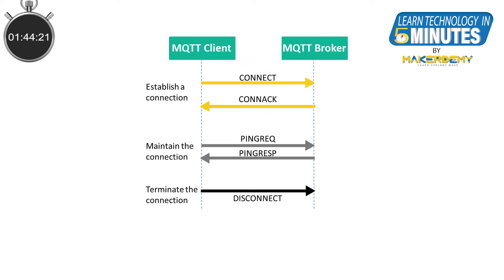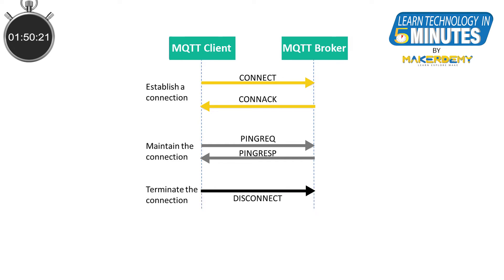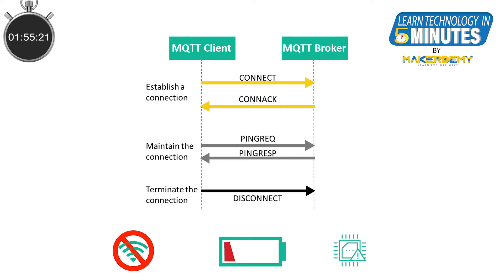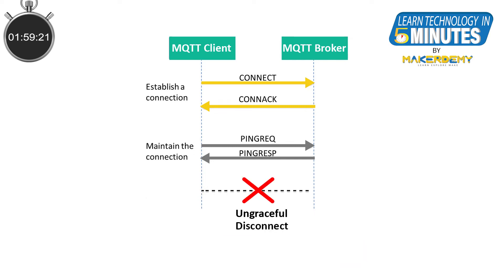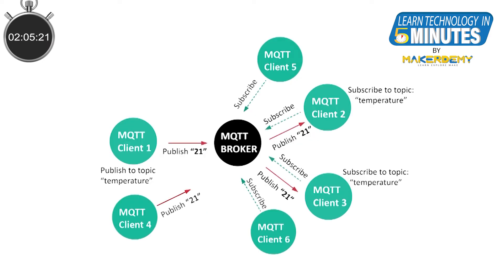Usually, if the client wants to disconnect from a broker intentionally, it will send a disconnect packet to the broker. But if a disconnect happens due to loss of connection, empty batteries, hardware failure, or any such reasons, then the broker won't be getting a disconnect packet. This is called an ungraceful disconnect.